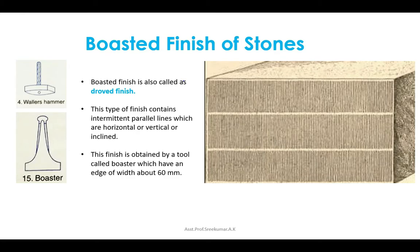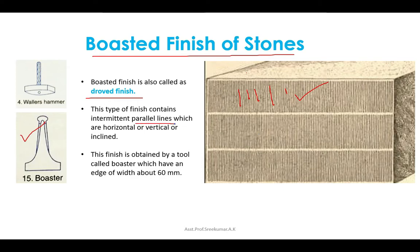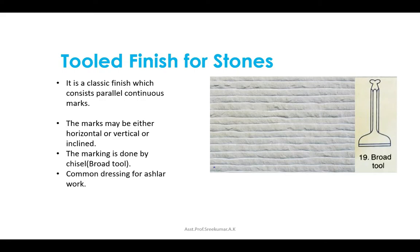The next type is the boasted finish, otherwise known as droved finish. The dressing is done with the help of a boaster and a hammer, forming a series of 38 to 50 millimeter wide bands of more or less parallel tool marks which cover the wall surface. The finish contains intermittent parallel lines which are horizontal, vertical, or inclined. The boaster tool has an edge width of about 60 millimeters.